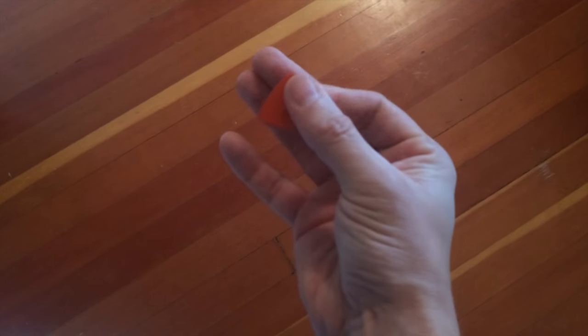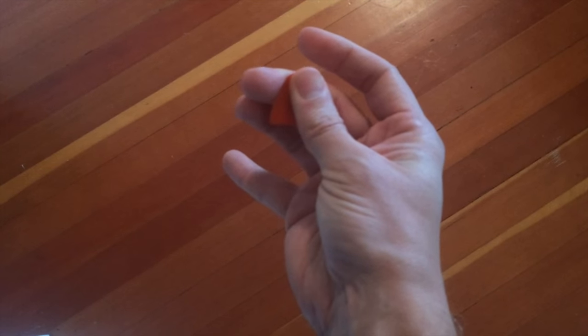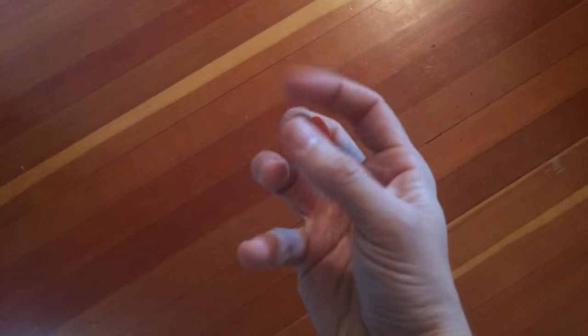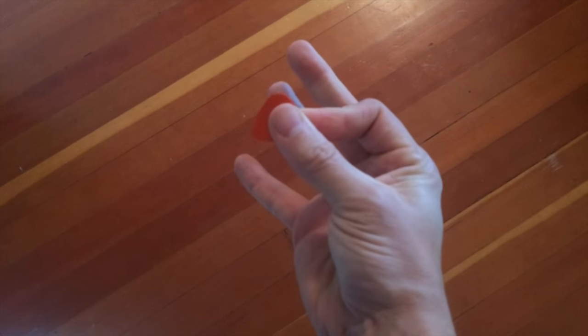When I want to switch, I simply slide my pointer finger back, pin that pick to my middle finger, and slide it back into place. Then I can go back to finger picking and make the switch again.